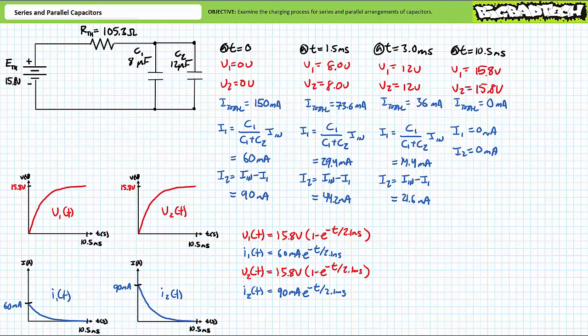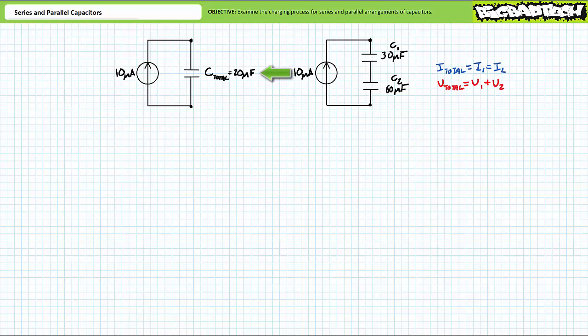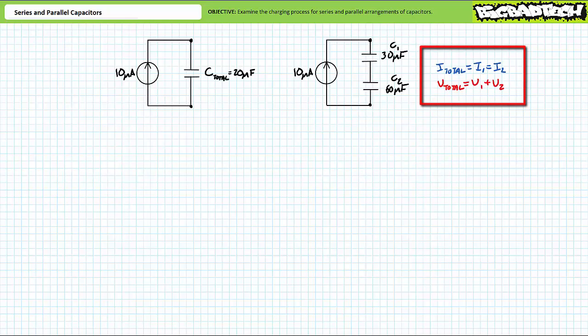Let's examine option five: unequal capacitors in series. This is perhaps the most counterintuitive scenario. We'll use a 10 microamp current source providing current to a series relationship of a 30 microfarad and a 60 microfarad capacitor, yielding a total capacitance of 20 microfarads. Despite the unequal capacitances, all series properties remain true: current through elements in series is the same, and V_total = V1 + V2. Unlike identical series capacitors, voltage will be apportioned unequally.